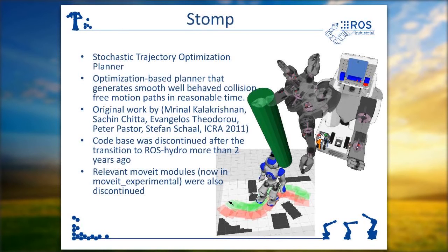Unfortunately, the source code for STOMP was discontinued more than two years ago during the transition to ROS Hydro. Along with that, several components of the MoveIt core library were also discontinued and moved into the MoveIt experimental package. Essentially, STOMP and those MoveIt core library components have been in a non-functional state for about two years or more.